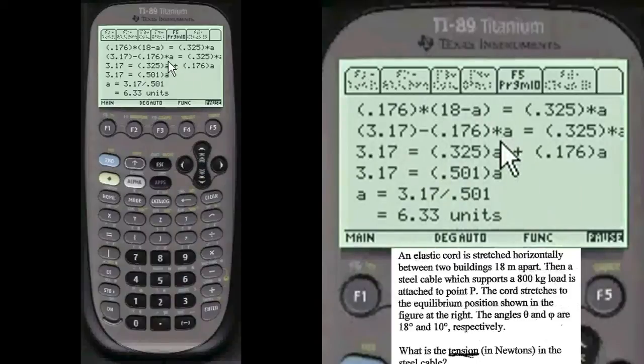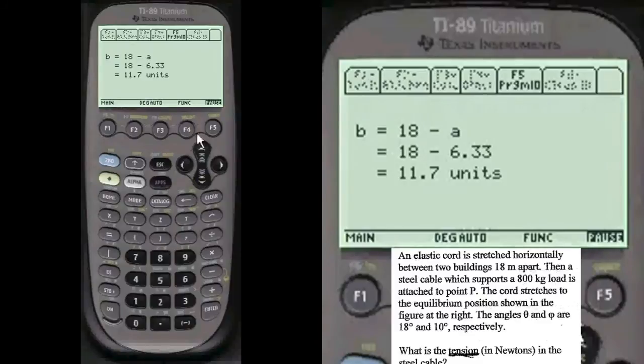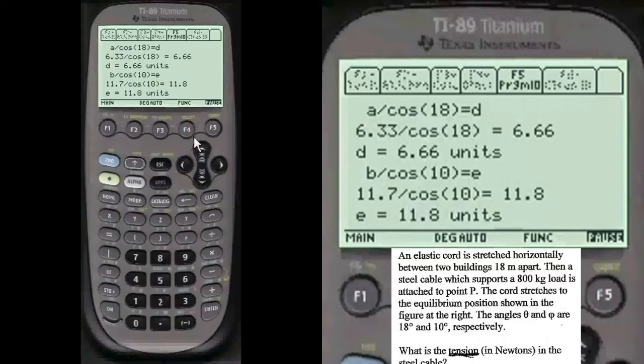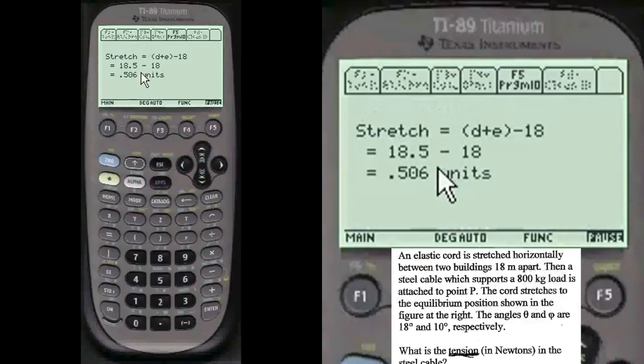And so the A above that A is 6.33 units. I use units because I don't know if it would give you centimeters or whatever, inches or whatever they might trick you with. But anyways, that portion of the triangle A is 6.33 and then we subtract that from the 18 and we get 11.7 units. And then the hypotenuse of D which is 6.66 units and then the hypotenuse of the 10 degree angle is 11.8 units. And we add those together, 18.5 minus what we started with and so the stretch is 0.506 units.